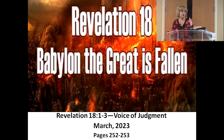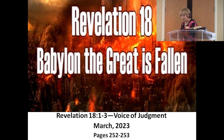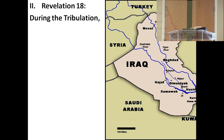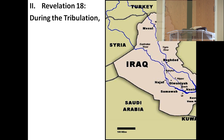We're doing Revelation 18. If you would, look at your newsletter because at the very bottom, letter B — we did letter A last week. The newsletter gives you the outline of Revelation 18. We're studying Babylon. Here is Iraq. Here is the capital of Iraq, Baghdad. Coming straight down on that river is the city of ancient Babylon, and you can go there today if you want to.